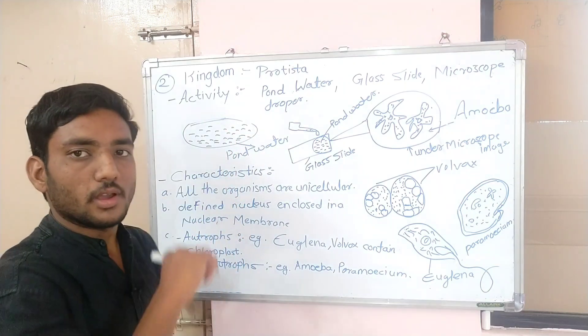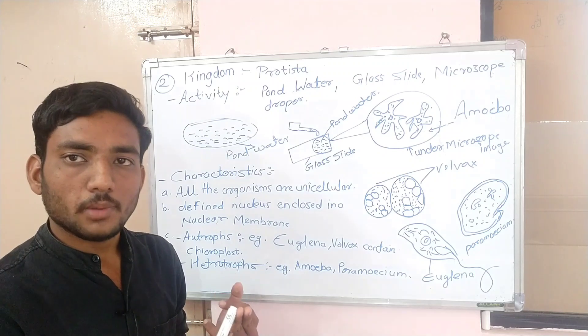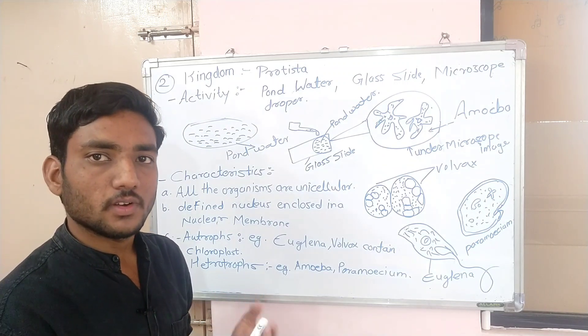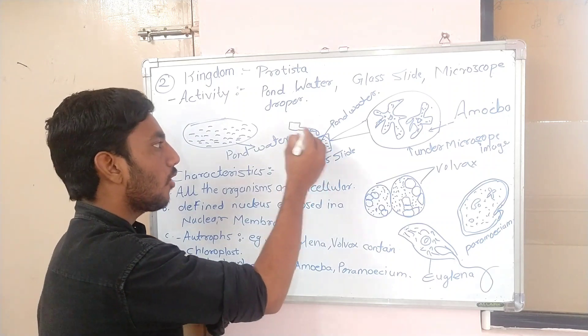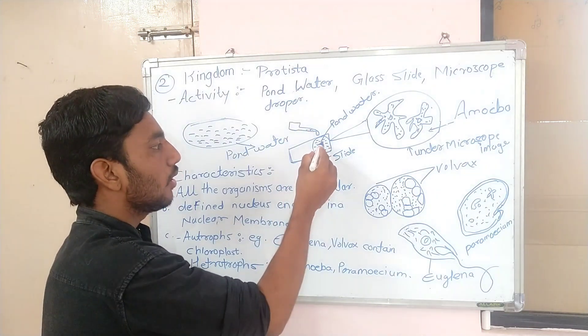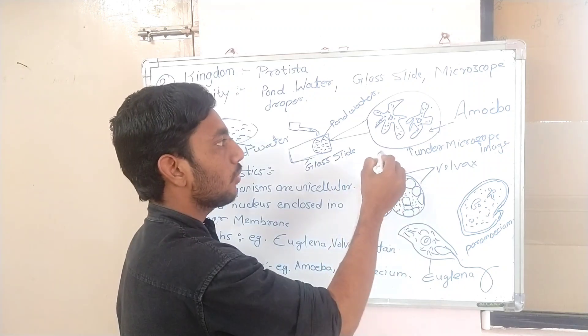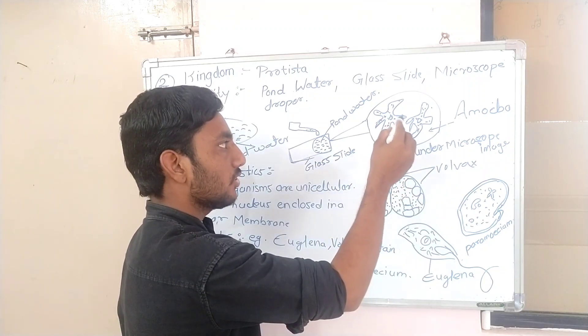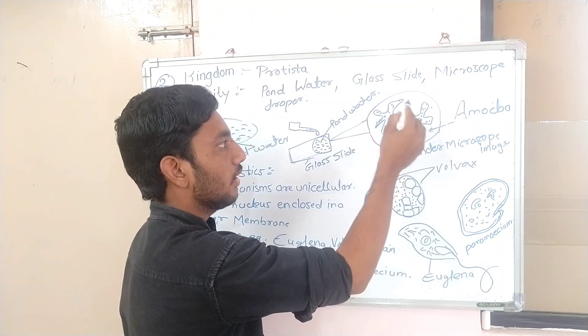Second kingdom is Kingdom Protista. Kingdom Protista start. Activity materials: pond water, microscope, glass slide. First, get the glass slide. On the glass slide, one drop of pond water added. Then under the microscope, there the image formed. The image you will see, various images.